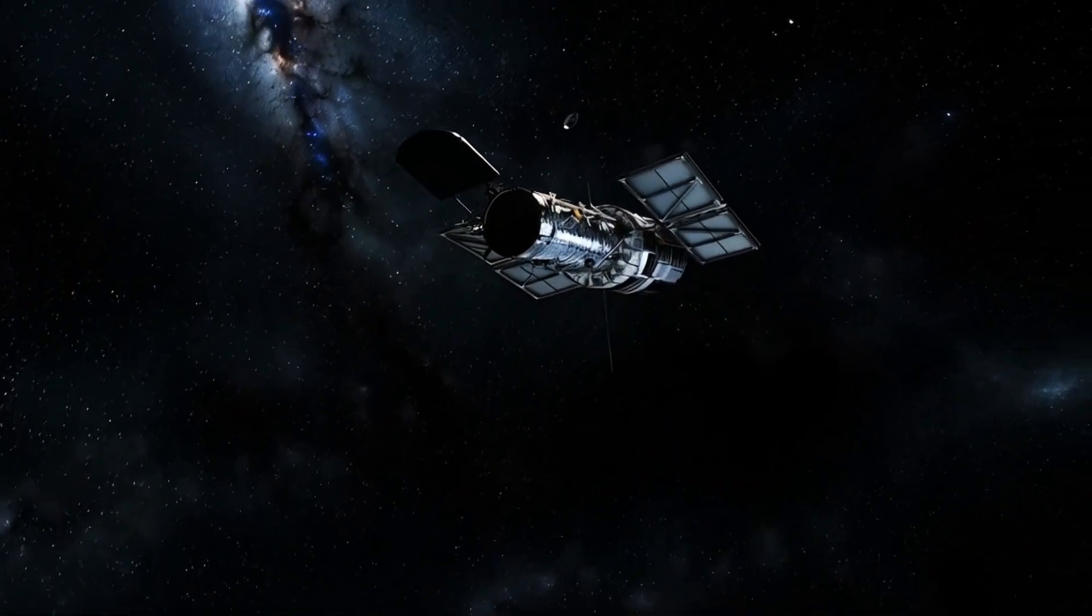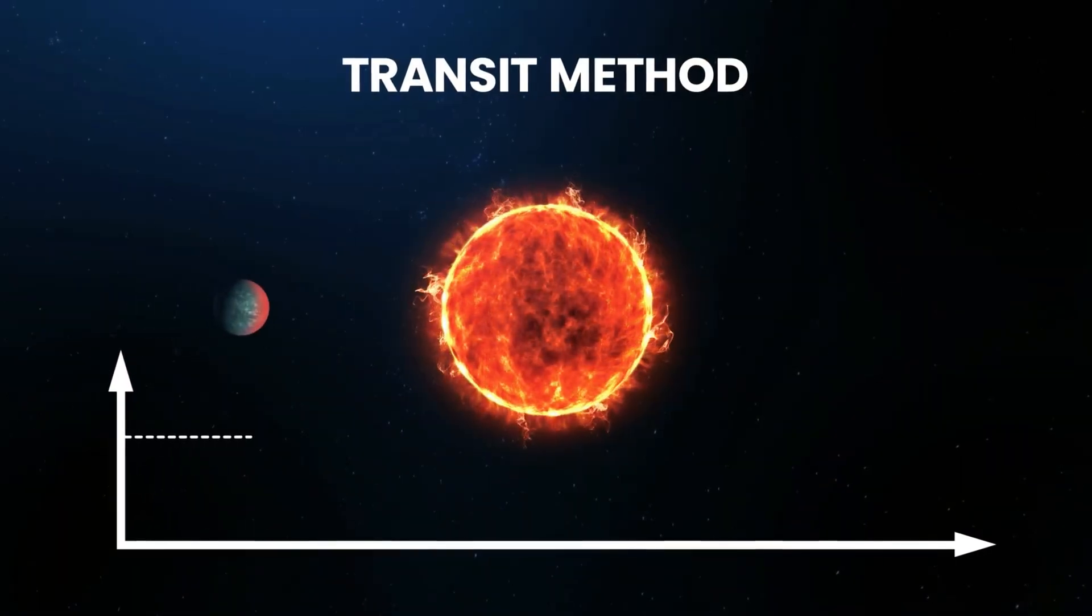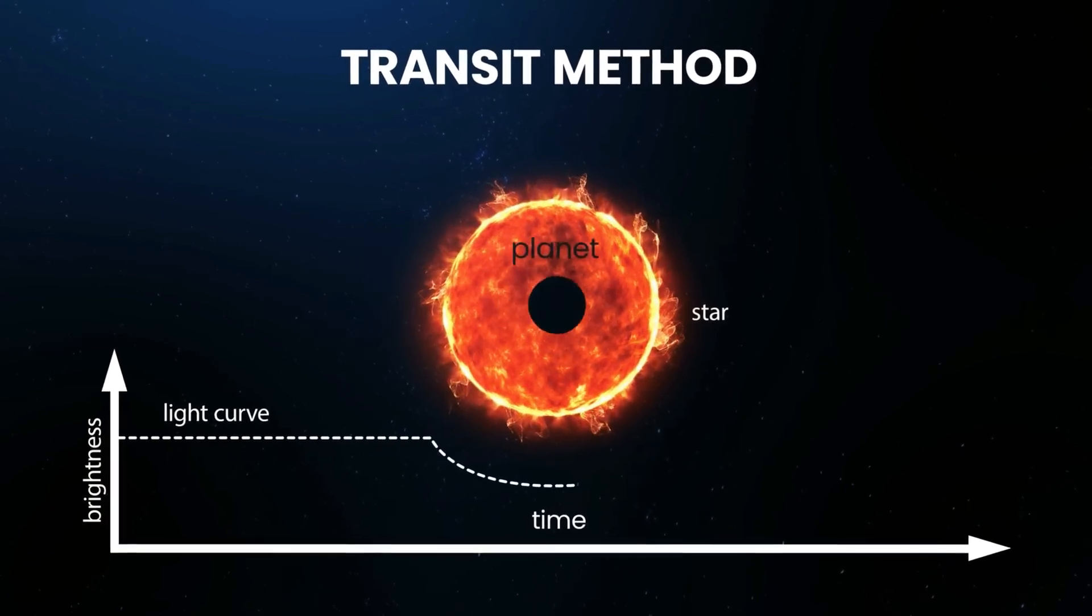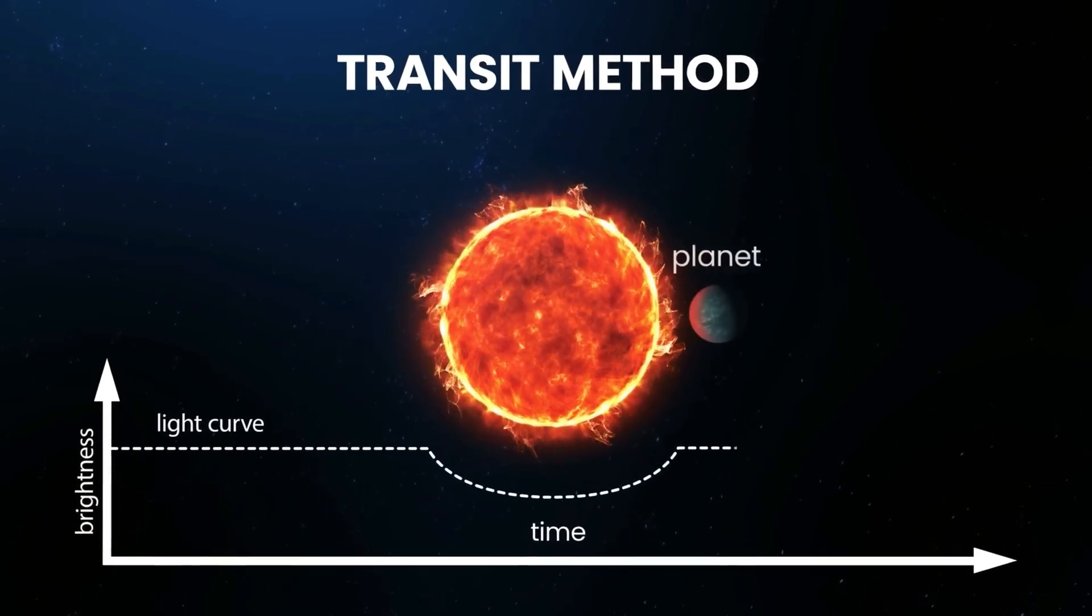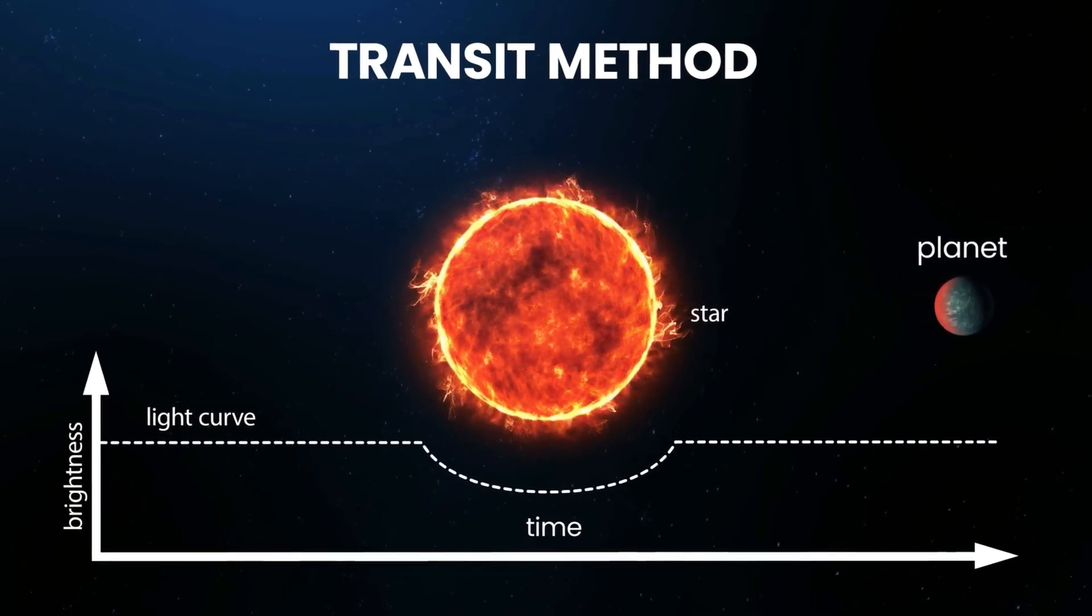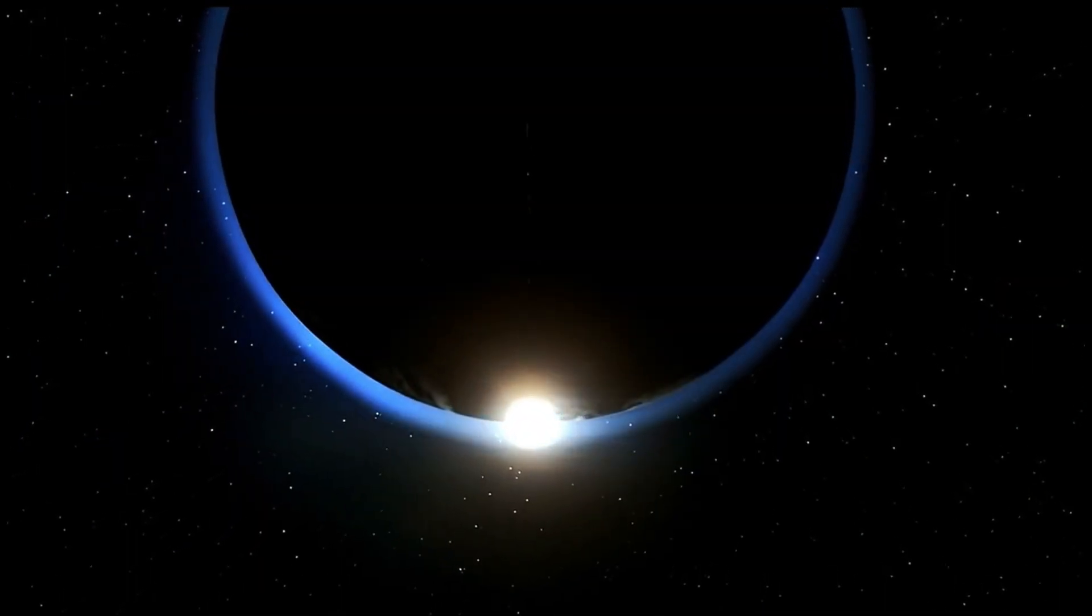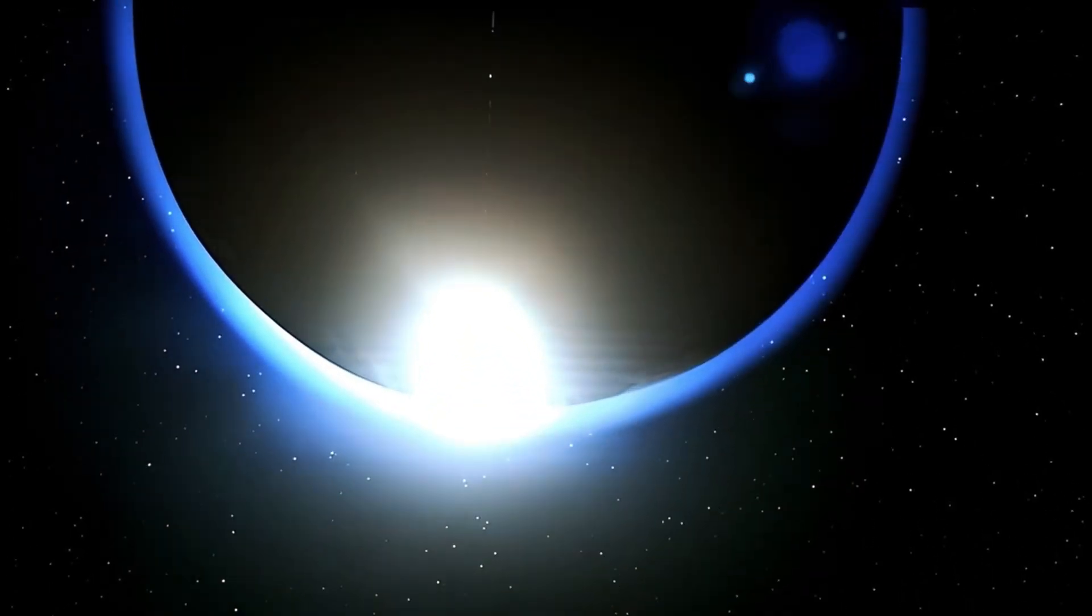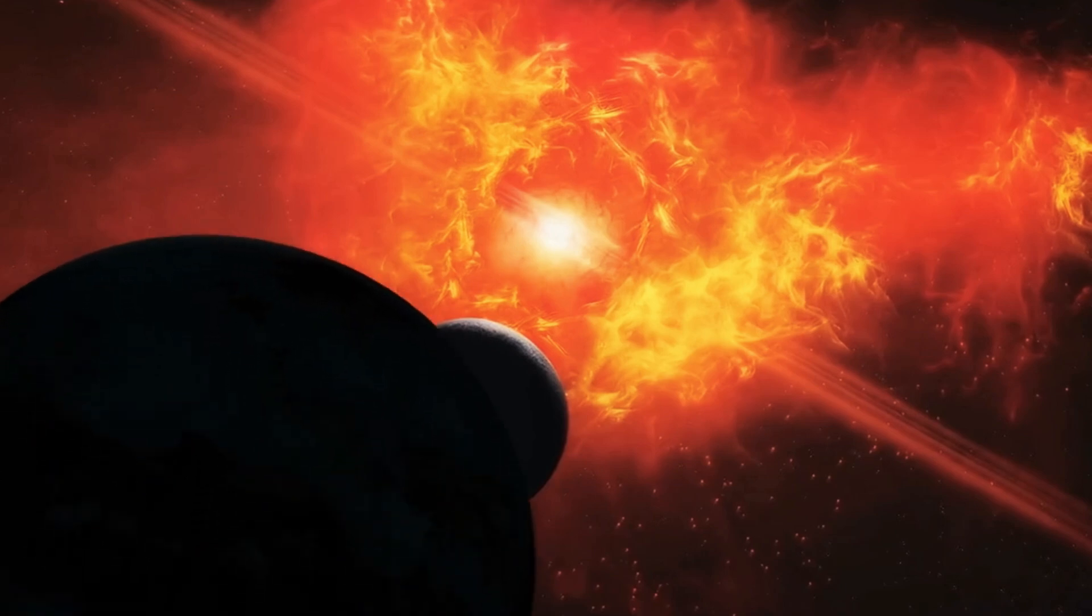Kepler mainly used what's known as the transit method for exoplanet hunting. It essentially means that if a planet passes in front of a star, the light from the star dims slightly, and that's how we can tell that there's a planet there. The level of dimming and how long it lasts gives us important information about the size and orbit of the planet.